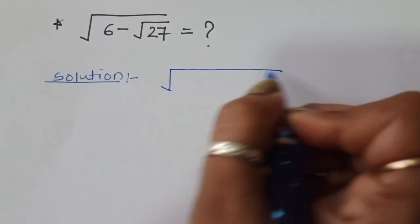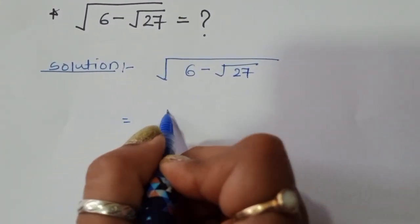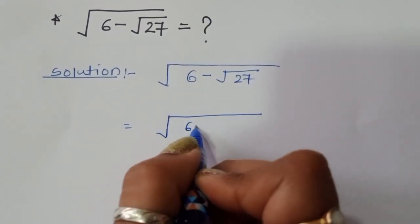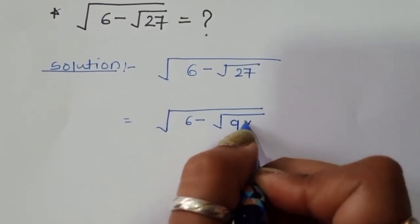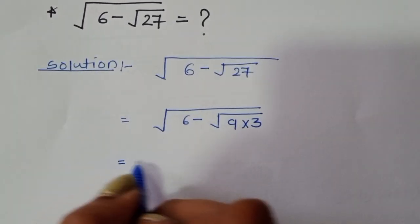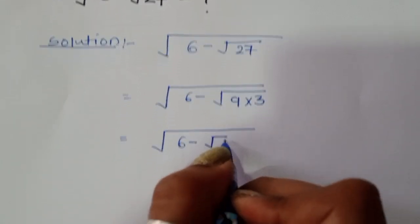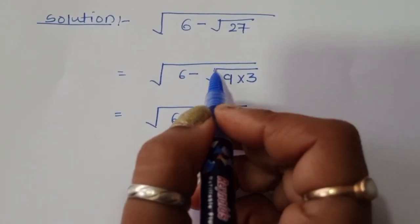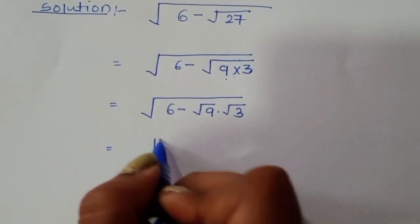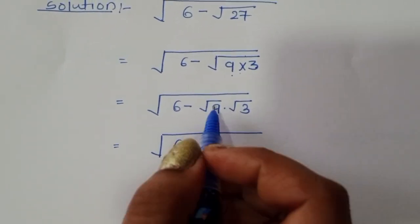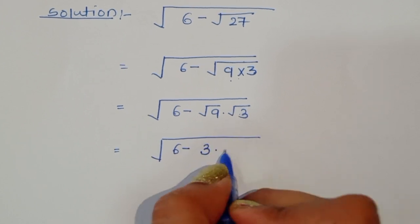We start with square root of 6 minus square root of 27. We can write 27 as 9 times 3, so square root of 27 becomes square root of 9 times square root of 3. Since square root of 9 is 3, this becomes square root of 6 minus 3 times square root of 3.